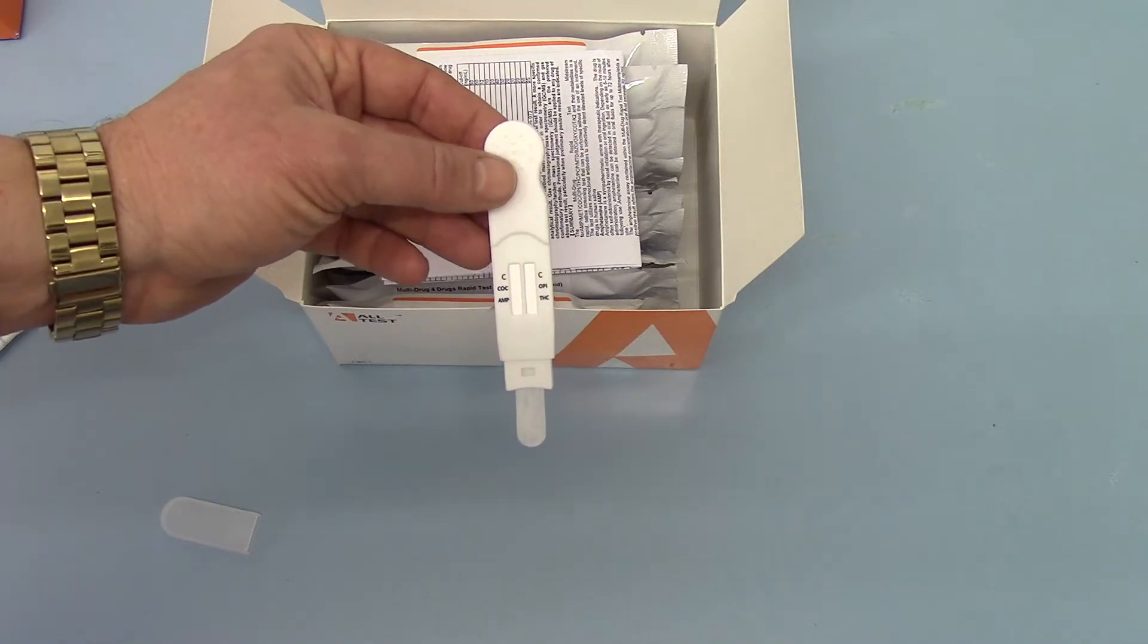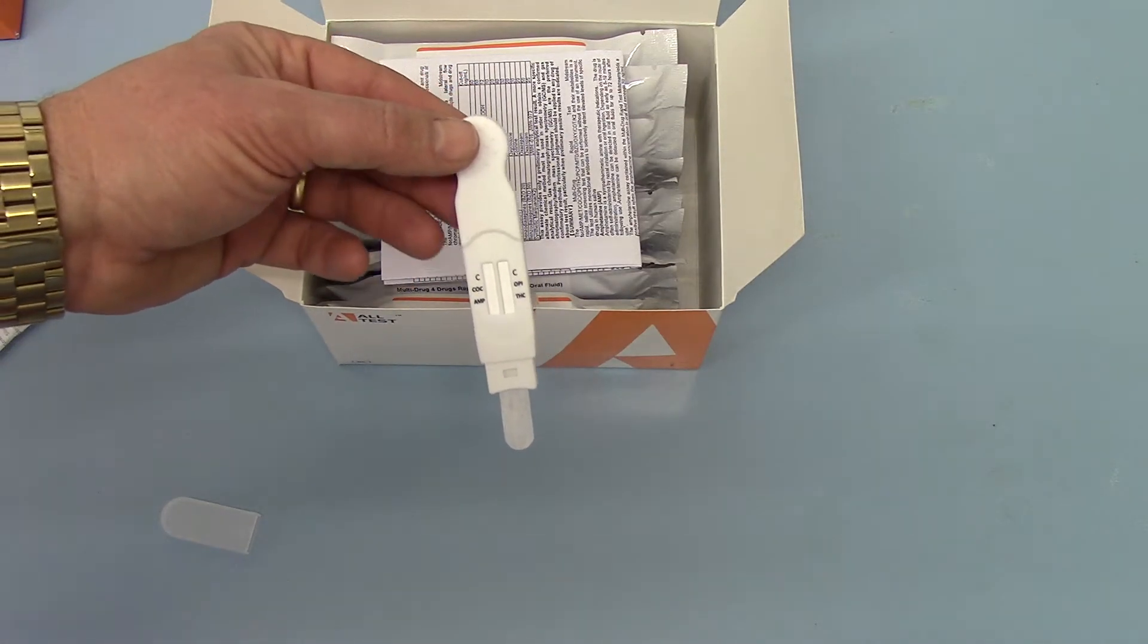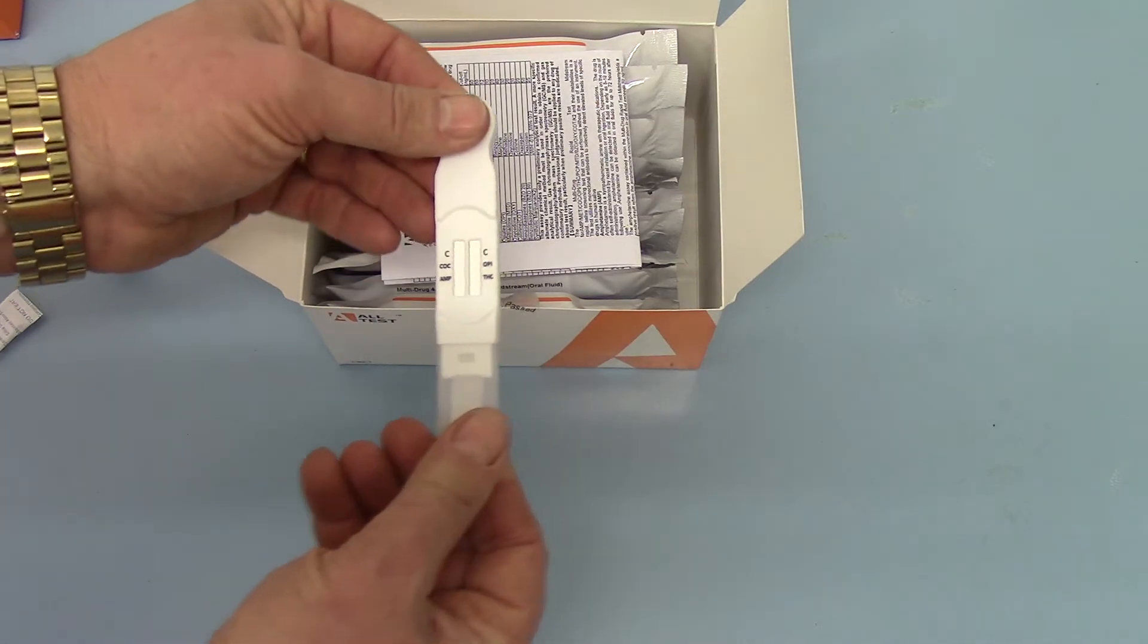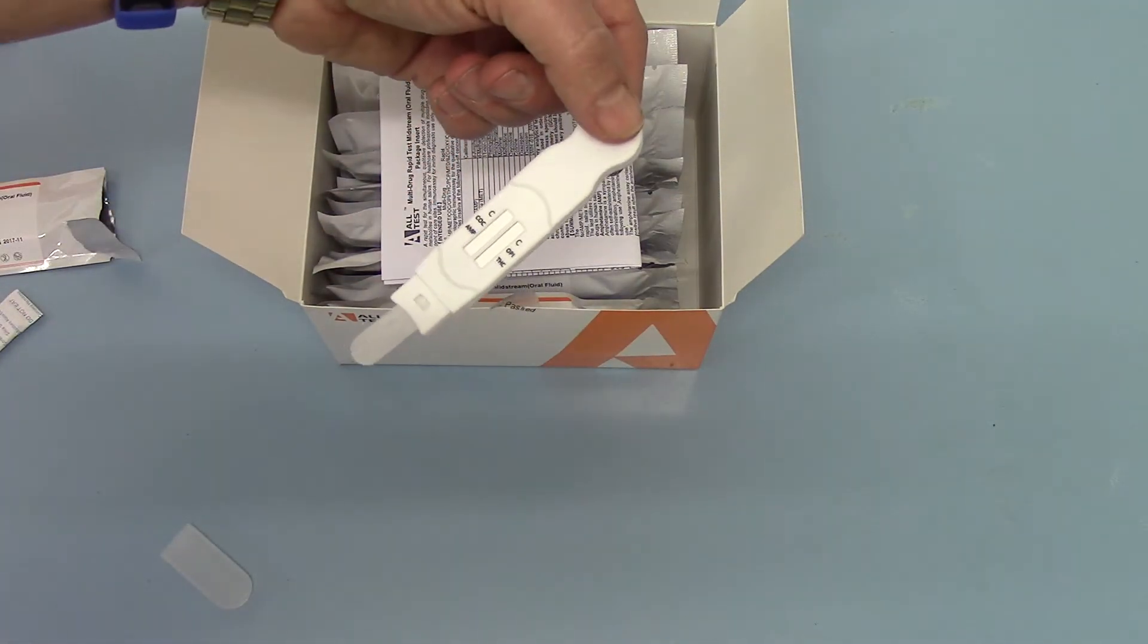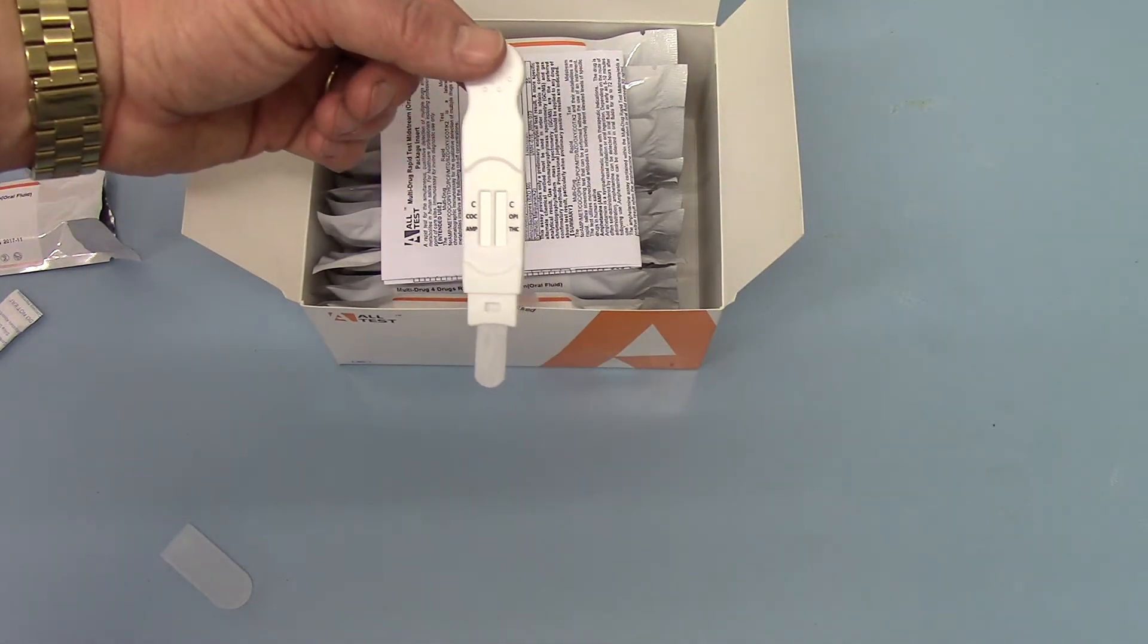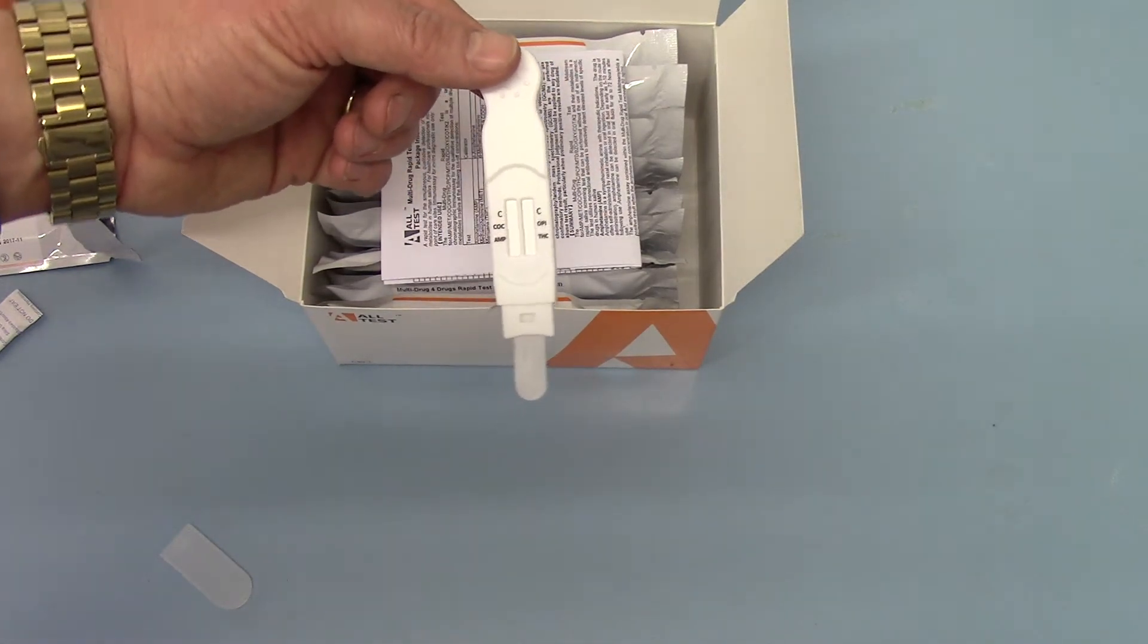So the procedure for running this test is simplicity itself. The test cassette is opened, the sheath or cover is taken off the prong, and it's handed to the candidate who saturates the tongue in saliva and the test automatically runs there.